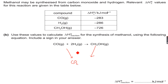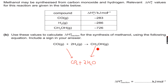H₂ hydrogen gas combusts to form water, and methanol combusts to form both carbon dioxide and water, so this cycle is correct. Now this is our delta H naught R here.